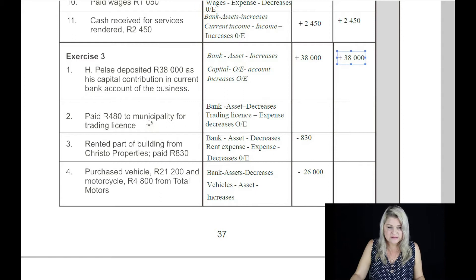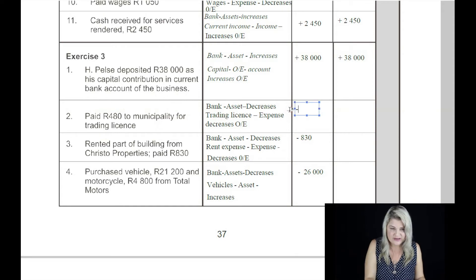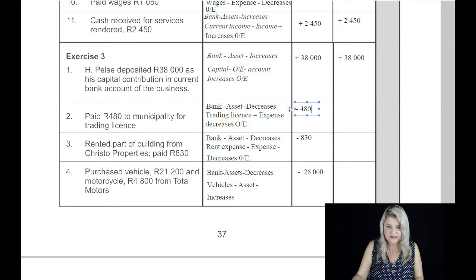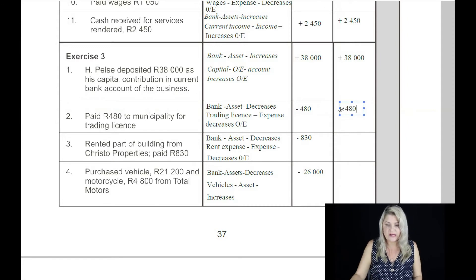On the second: pay 480 Rand to the municipality for trading license. The two accounts affected are bank and trading license. The bank is an asset and that decreases because we're paying money from the bank account — 480 Rand. Trading license is an expense and an expense always decreases owner's equity — 480 Rand.